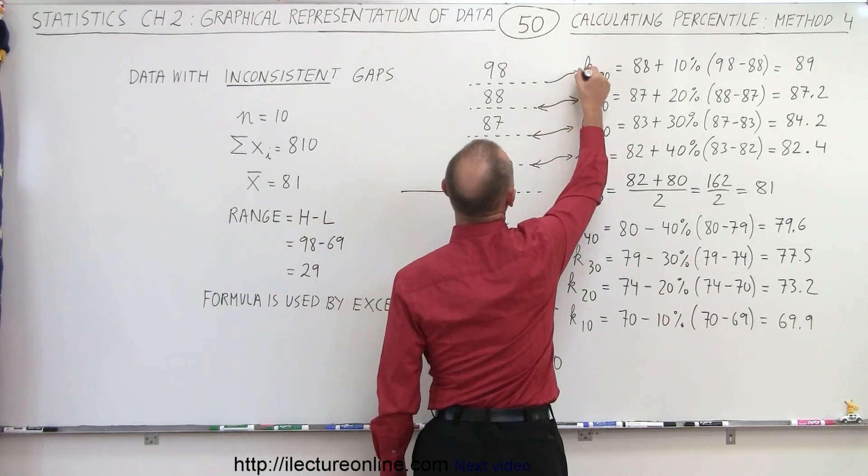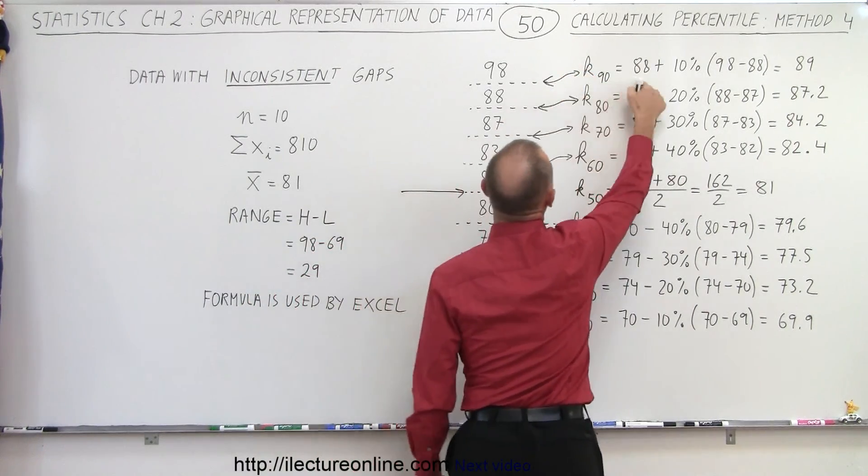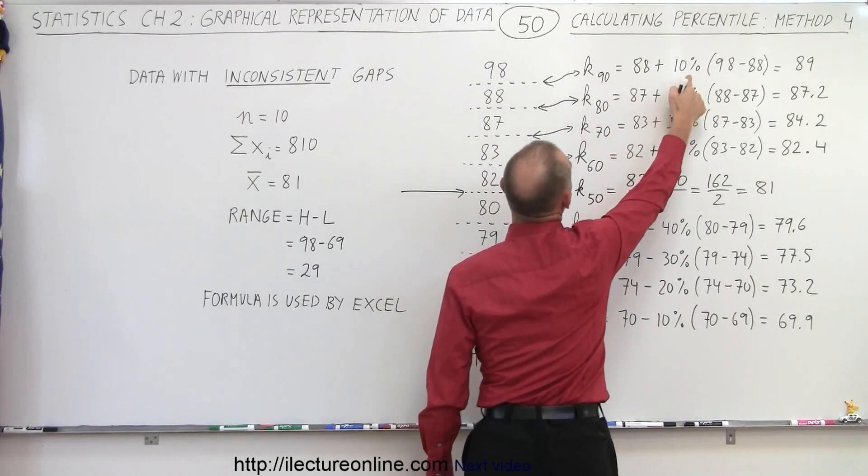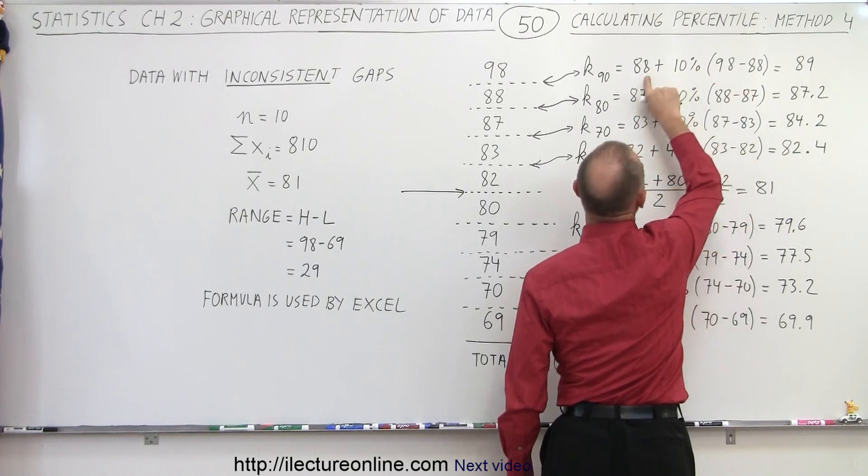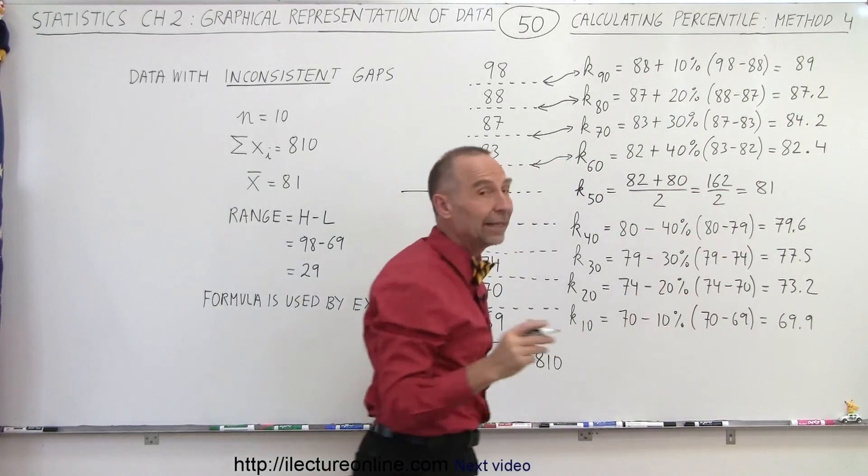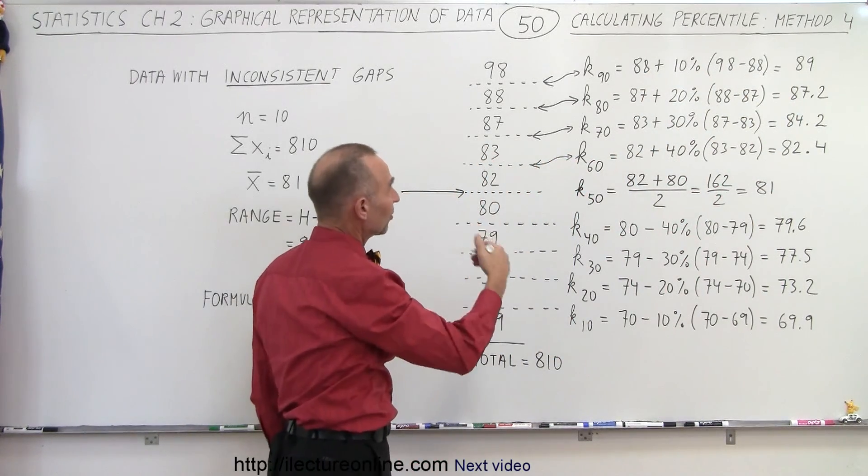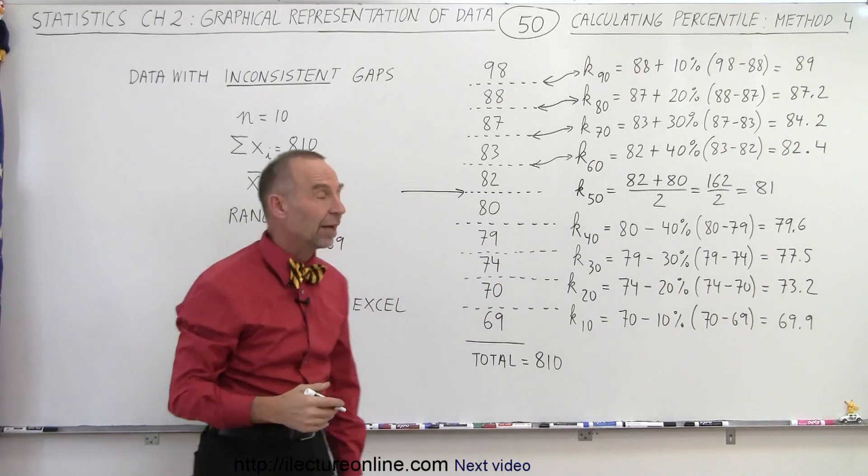And finally, to get to the 90th percentile, we take the lower of the two values and we add 10% of the difference between the two, which is 10. 10% of 10 is 1. 1 plus 88 is 89. And that is how we find the 50th, the 60th, the 70th, the 80th, and the 90th percentile.